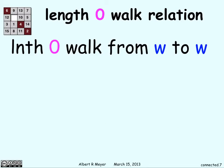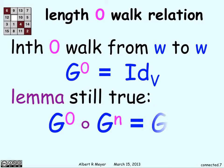The length 0 walk relation just makes each vertex go back to itself, like it points back to itself, the identity one. And the lemma is still true, G^0 composed with G^n is just G^n, which makes sense, everything itself plus G^n just gives you G^n.